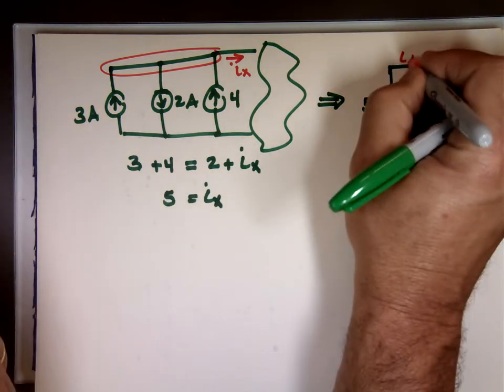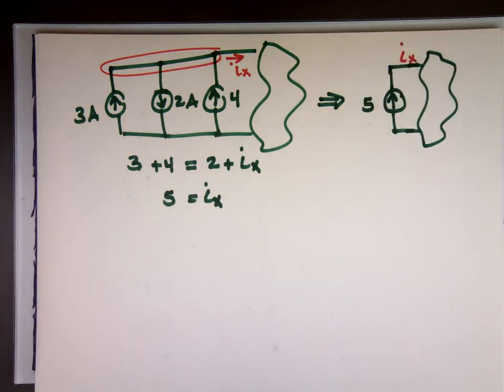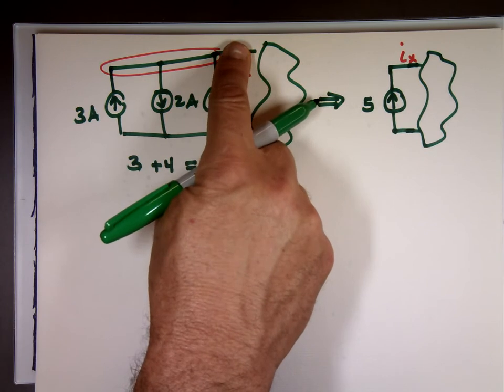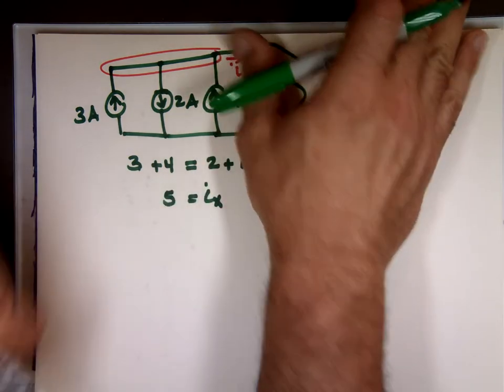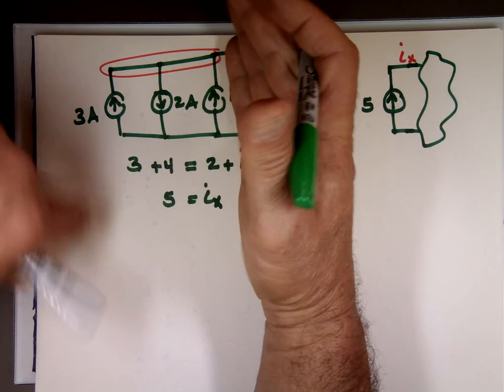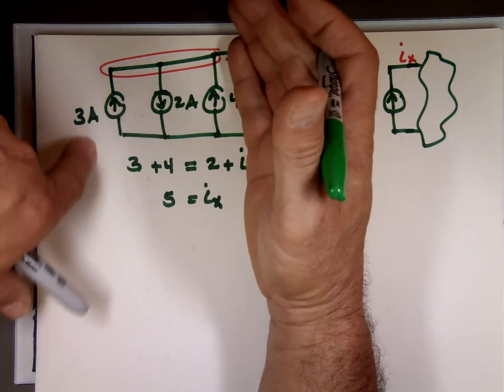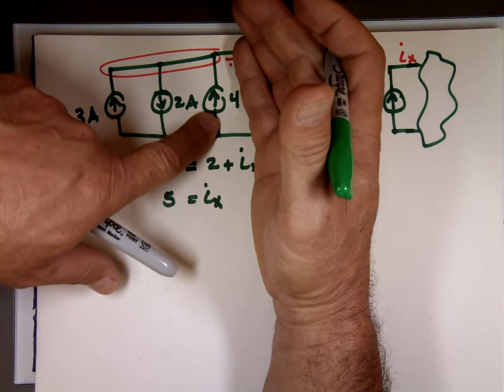So if you didn't have the current source I x, let's say you didn't have the right portion of it, would it still? There's no other leaving that node? Well, then we have a problem here. The current entering node should equal the current leaving that node. That can't be 3, can't be 2, and 4. You have to have different numbers.